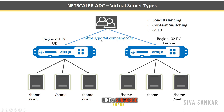GSLB is used when you have two data centers — one in the US and one in Europe — running the same website, like portal.company.com. When a user comes from the US, you want them sent to US servers; from Europe, to Europe servers. NetScaler appliances talk to each other, check via DNS where the user is coming from, and route traffic to the appropriate data center. This is Global Server Load Balancing.